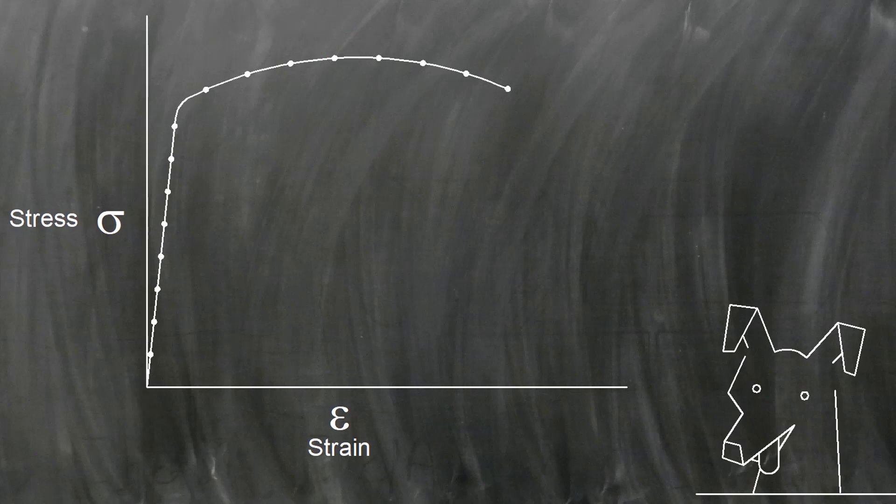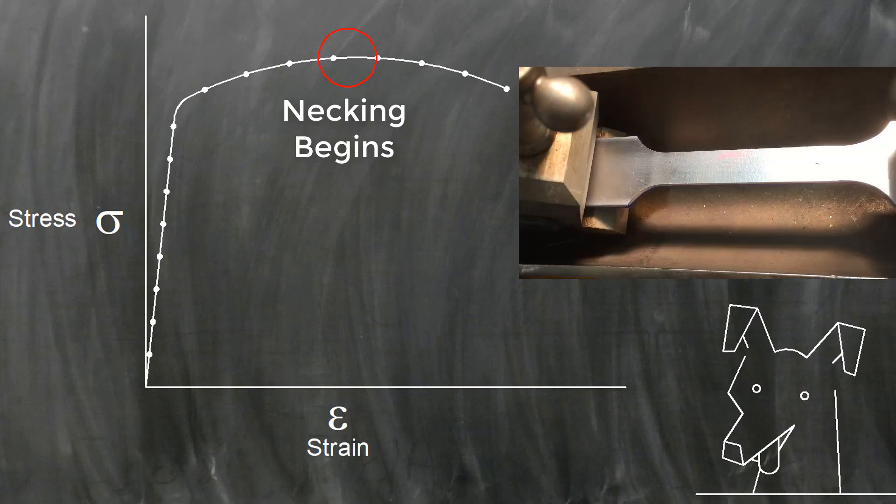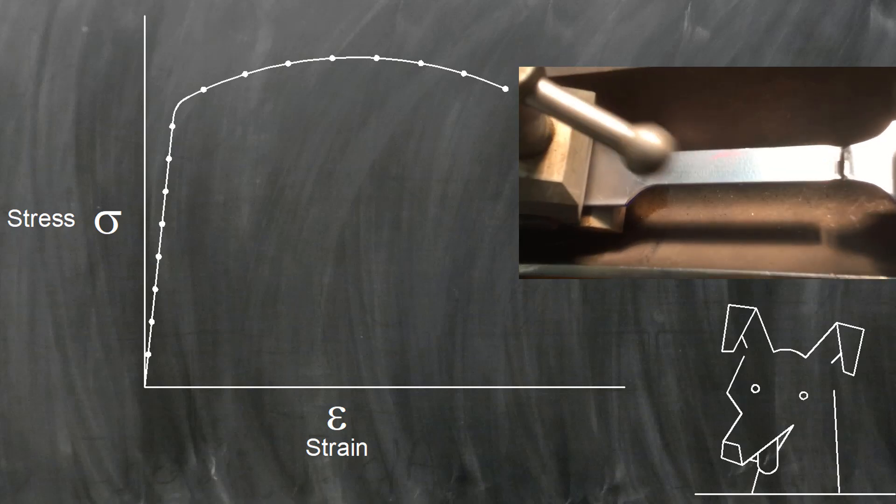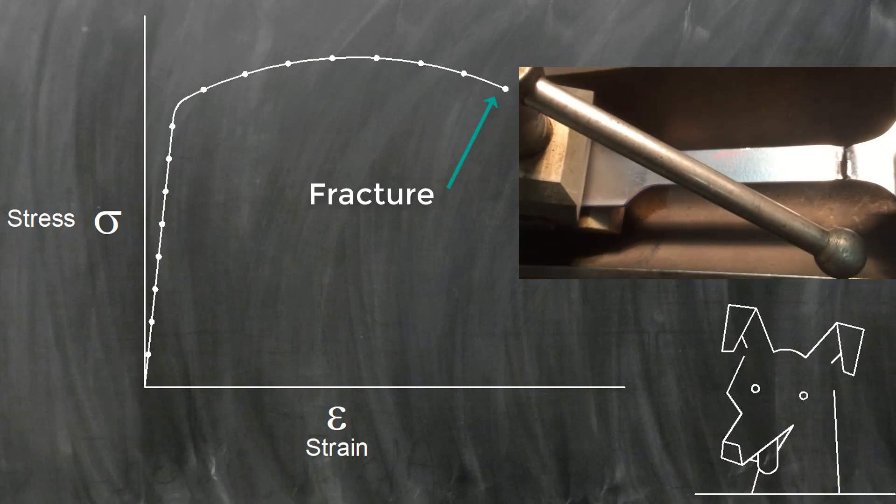Eventually the material flowed so much that this neck formed. As the neck formed on the sample the stress on our part started falling back down again. Eventually the specimen broke and that was the end of our test.